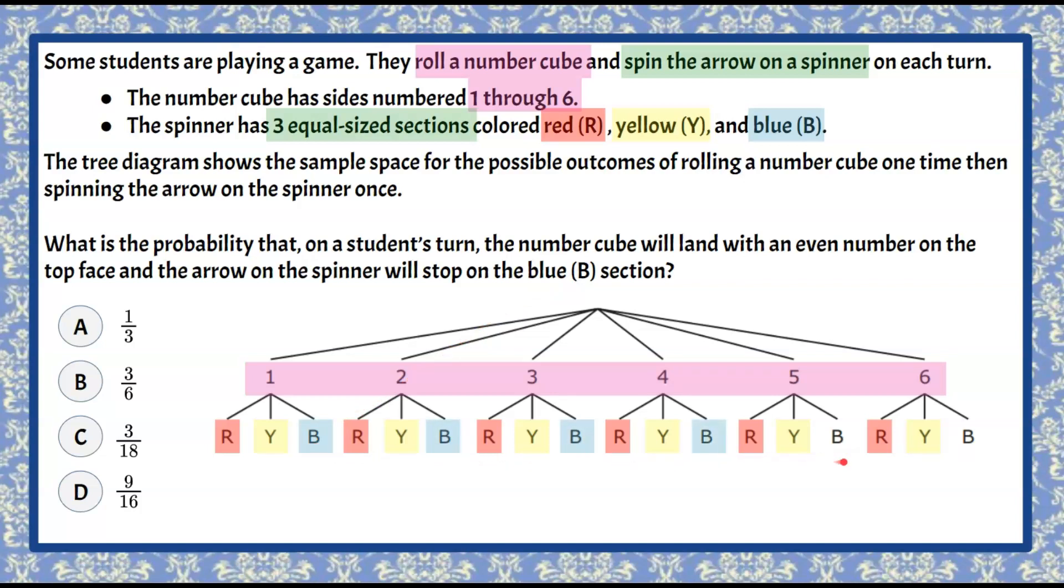So now that we've color coded it, we can see that we have our compound probability. We're going to roll our number cube and then we're going to spin our spinner.